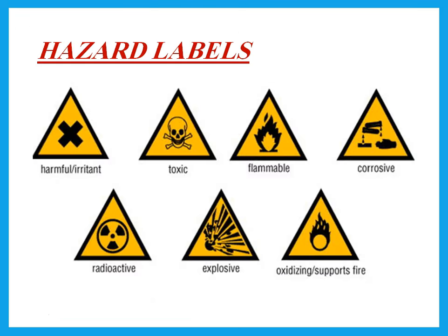Hazard labels do not come very often, but notice the label for toxic — you would see that skull symbol on a bottle of chlorine gas, for example, because chlorine gas is toxic. The label for corrosive you will see on an acid or a base.